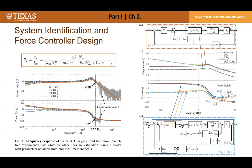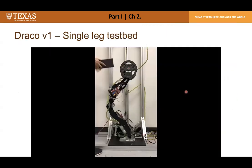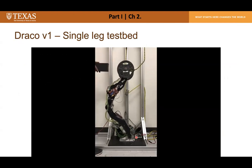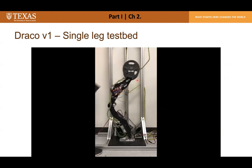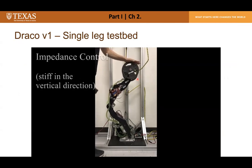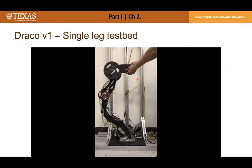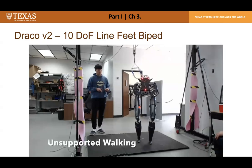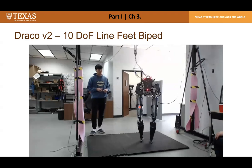PD plus disturbance observer showed better performance than PID in terms of phase margin and maximum phase lag. Draco version 1 has two VLCAs on the knee and ankle; in this video I was testing an impedance controller designed to be compliant in the horizontal direction but stiff in the vertical direction. Draco version 2 has five VLCAs per leg and is shown walking using the algorithm developed by my previous colleague.